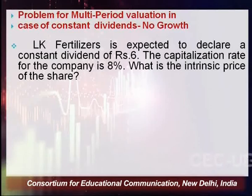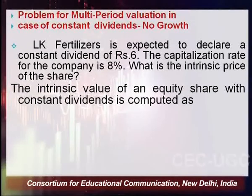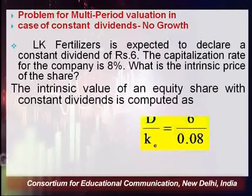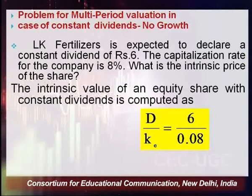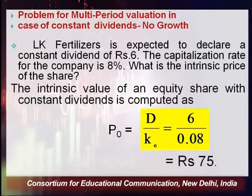Let's solve a problem for multi-period constant dividend valuation (no growth). LK Fertilizers is expected to declare a constant dividend of rupees 6, and the capitalization rate is 8%. To find the intrinsic price: P = D ÷ ke = 6 ÷ 0.08 = rupees 75. When there is no growth in dividend, it is quite straightforward to calculate the intrinsic value of the share.